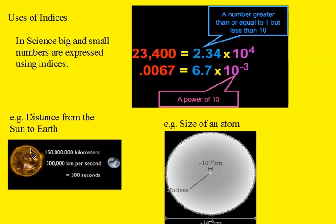For example, if we're talking about the distance from the sun to the earth, it's a big number which can be expressed in scientific notation. The size of an atom. In this little diagram, they've already expressed the numbers in scientific notation.